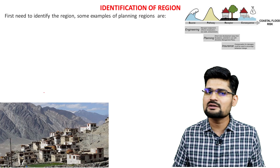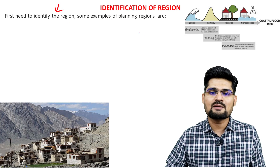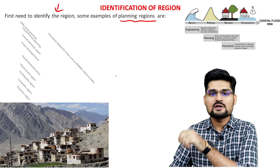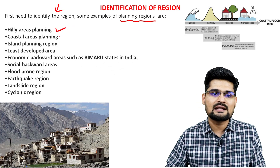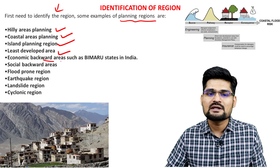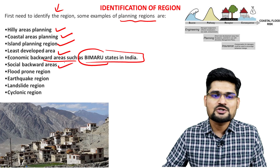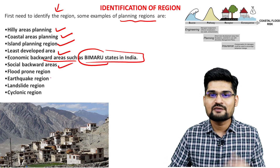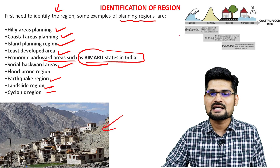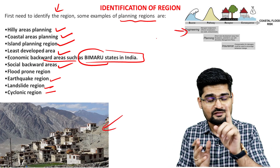Step one — identification of a region — involves identifying planning regions based on multiple problems and prospects. Examples include hill areas planning, coastal areas planning, island planning, least development area planning, economically backward area planning (such as BIMARU states in India), socially backward planning, flood-prone areas, drought-prone areas, earthquake zones, landslide regions, Himalayan regions, cyclonic regions, and coastal regions.